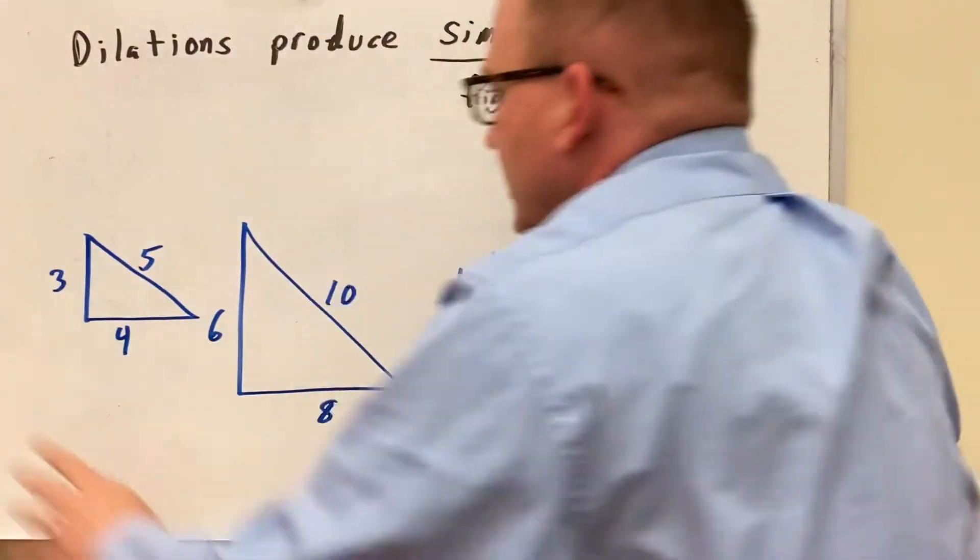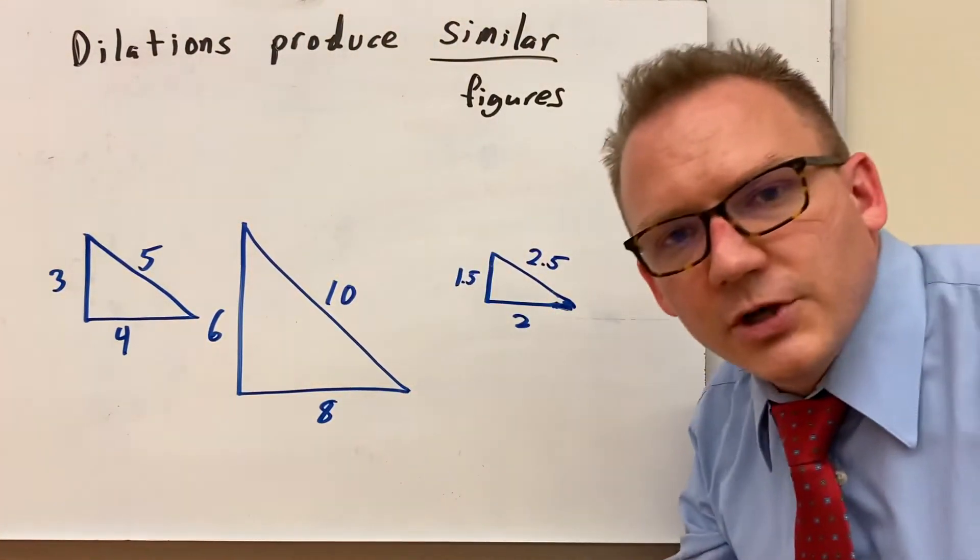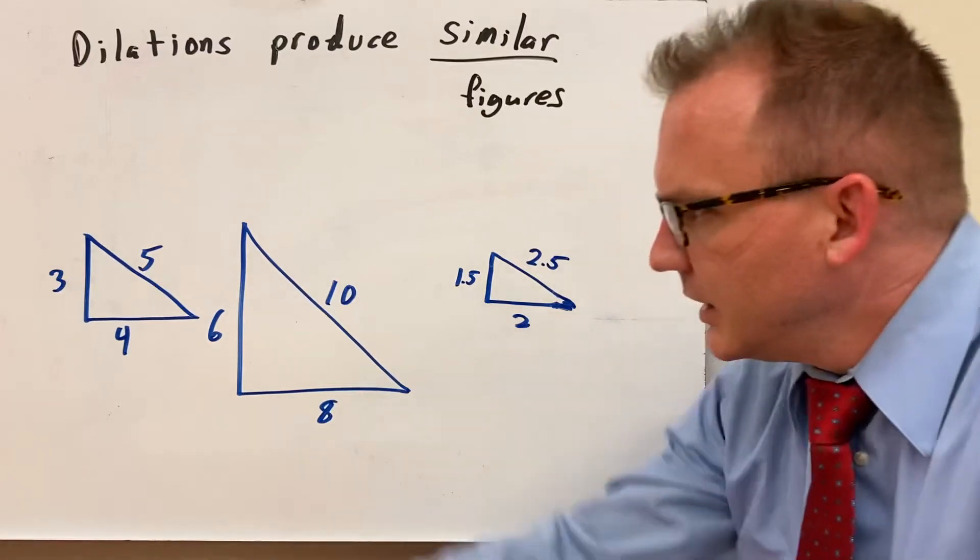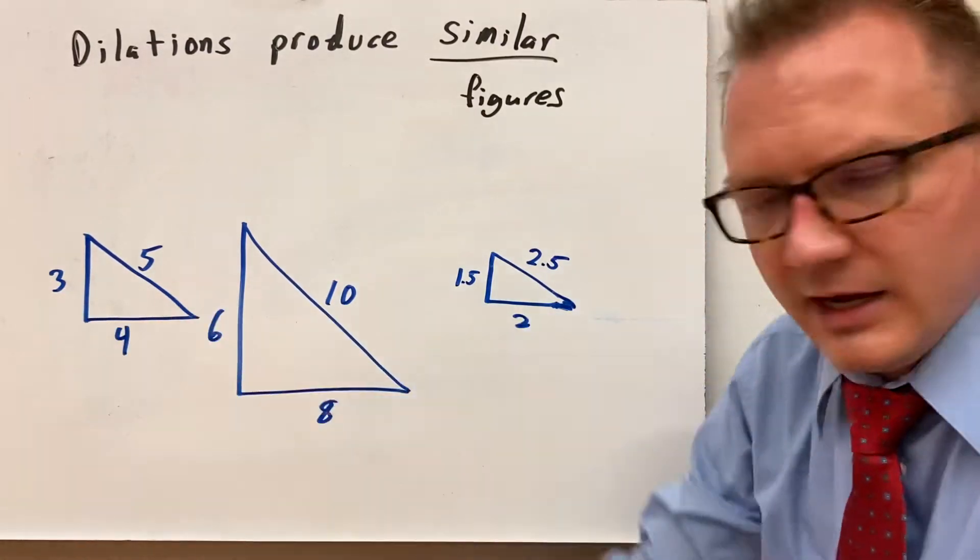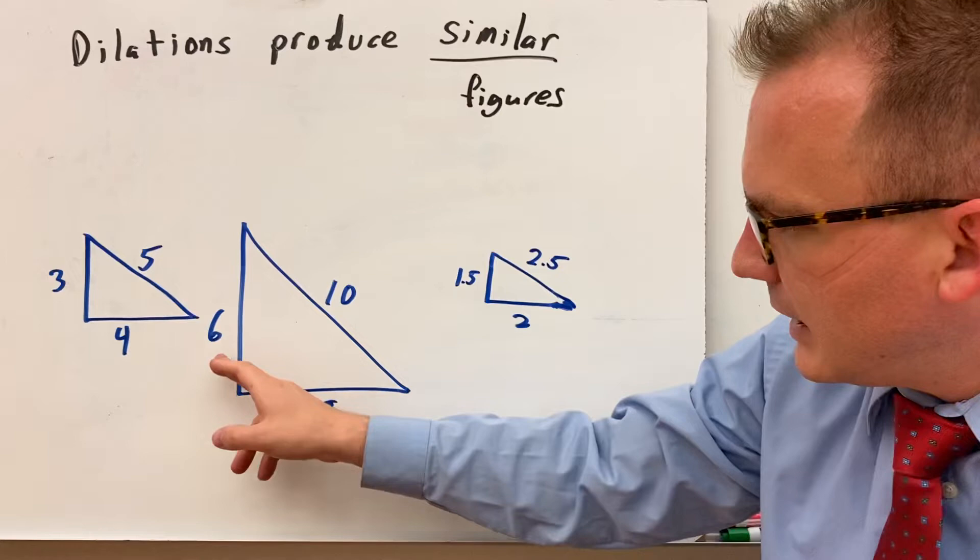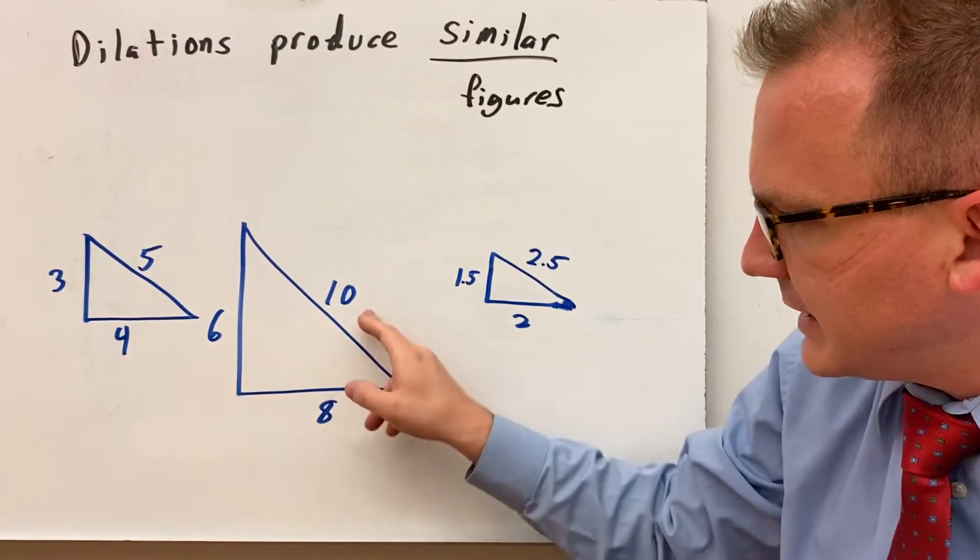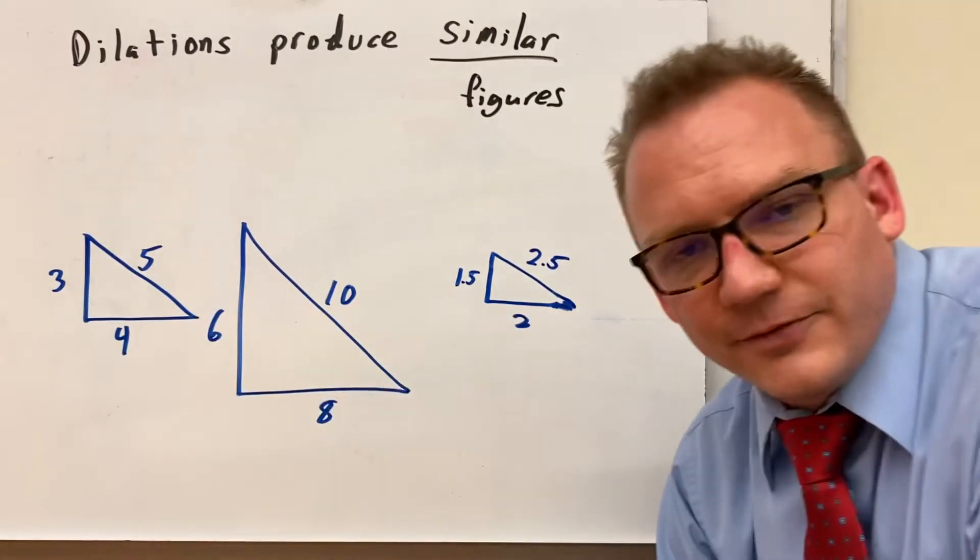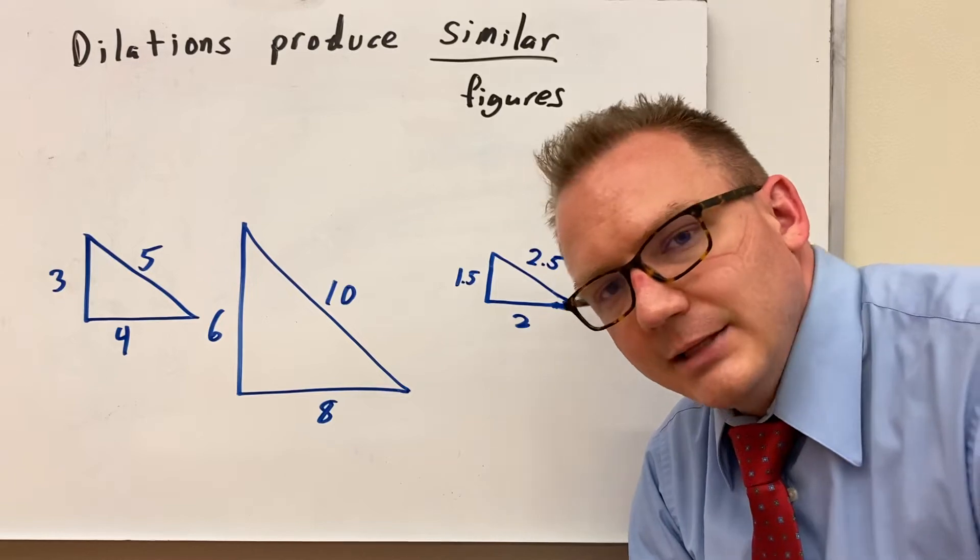Now what that created for us here was similar figures. So with these similar figures we start out with this 3, 4, 5 triangle and when I grow it I have 6, 8, and 10. So these side lengths are different, it's not congruent, it's not exactly the same.